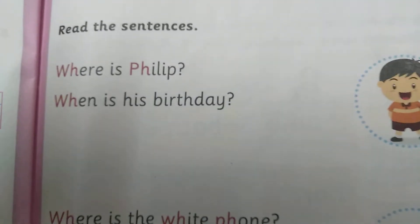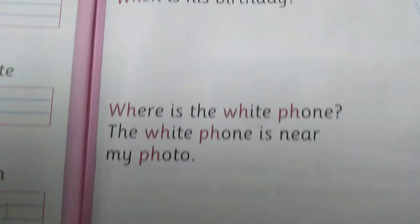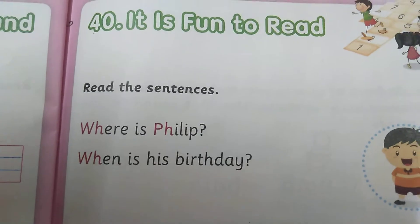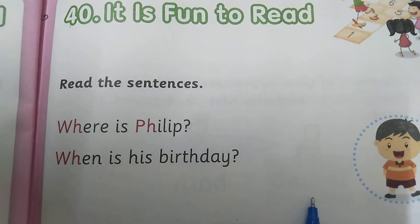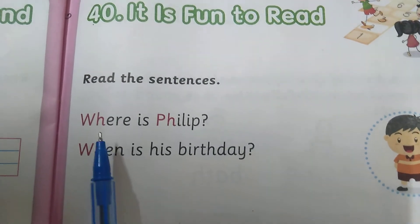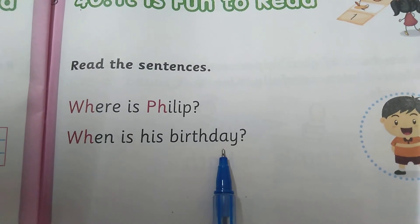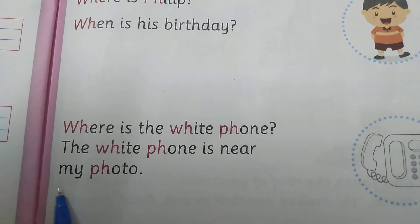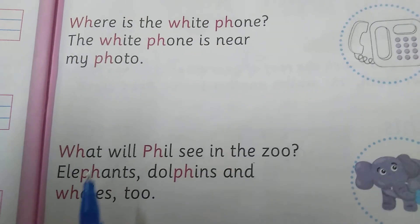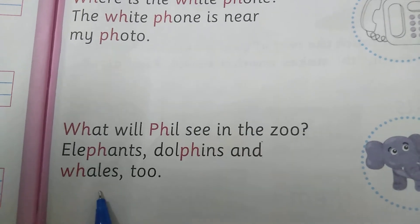So, you see how we are making questions using where, when, why, what, who — these types of sight words. So, you try to read all the sentences and spell them properly. Where is Philip? When is his birthday? Where is the white phone? The white phone is near my photo. So, what will Philip see in the zoo? Elephants, dolphins and whales too.